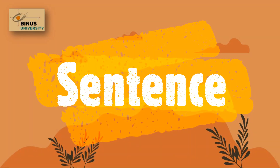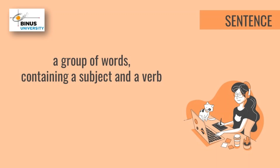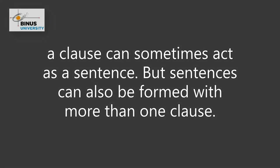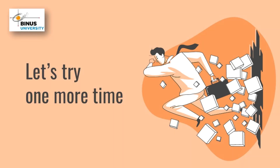Now, what about sentence? Sentence is also a group of words containing a subject and a verb. Yet, what makes it different with a clause is that sentences can stand alone as a clause, or be combined with other clauses. In other words, a clause can sometimes act as a sentence, but sentences can also be formed with more than one clause. We will learn about this on the next part, so our focus now is to identify sentence with one clause. Remember, every clause must have a subject and a verb.